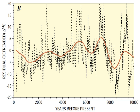Solar cycles have an average duration of about 11 years. Solar maximum and solar minimum refer respectively to periods of maximum and minimum sunspot counts. Cycles span from one minimum to the next.